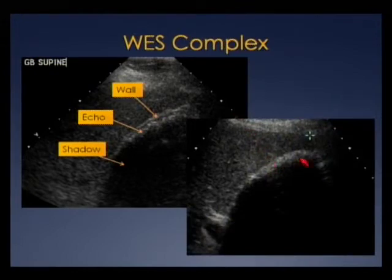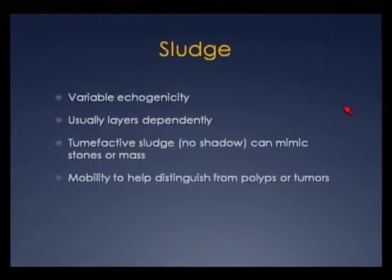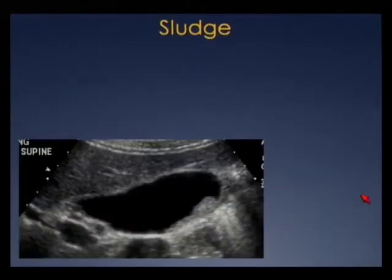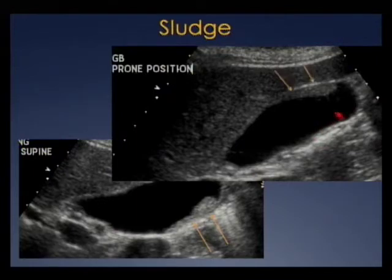Sometimes the echogenic wall and echogenicity of the stones combine into a single echogenic line with just the shadow. Sludge can have variable echogenicity and usually layers dependently. Tumefactive sludge can mimic stones but should still move, so mobility helps distinguish it from polyps or tumors. Here's a sagittal image with polypoid echogenicity — we didn't know if it was a lesion or sludge. We moved the patient and put them prone, and the morphology of the sludge changed — confirming it was sludge and not a lesion.